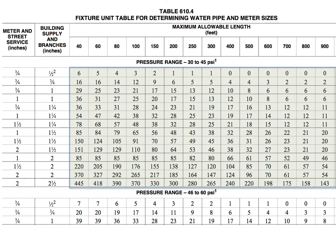Table 610.4 is the table we use if we are going to do the simplified method for sizing a water distribution system. If we look at the table, we see a highlighted area underneath pressure range 30 to 45 psi, and all the numbers in that shaded area are simply fixture units at any given point in the building — it could be on a branch, on a riser, your building supply, or even your street service coming in. They are fixture unit totals, and part of this video is talking about giving flushometer valves a fixture unit value.